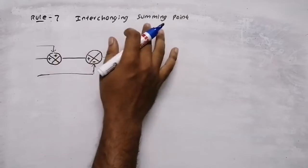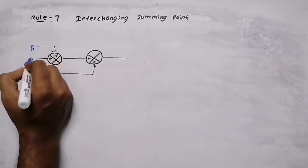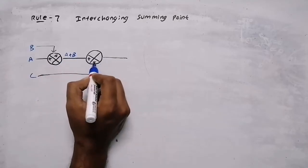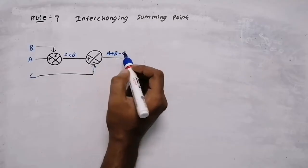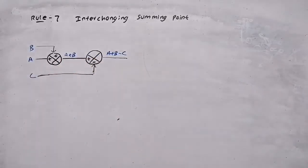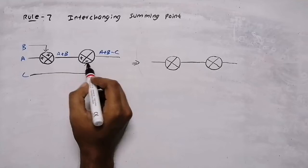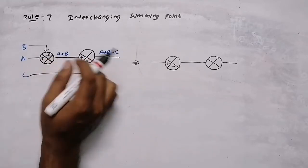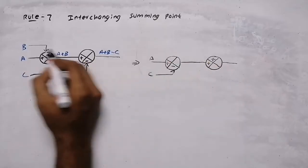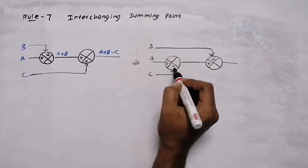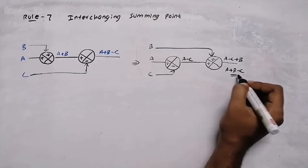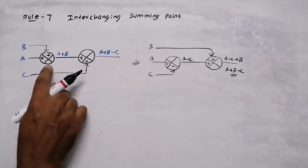In rule number seven, we interchange summing points. With two summing points — inputs A, B (first summing point, plus/plus) and C (second summing point, minus) — the output is A+B−C. Interchanging: inputs A and C (minus) at the first summing point, and B (plus) at the second. Output: A−C+B = A+B−C. The same output is obtained. Summing points can be freely interchanged.